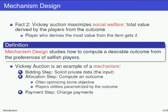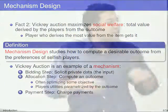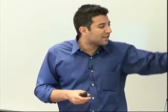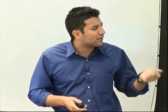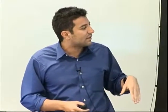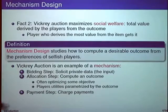This is what mechanism design tries to do more generally: figure out how to compute desirable outcomes from the preferences of selfish players, extracting information and doing the computation simultaneously. The Vickrey auction is an example of a mechanism — a three-step process: a bidding step, an allocation step where you compute the outcome, and a payment step where you charge people to incentivize proper behavior. A player's utility is determined by the second and third steps, so they choose what to do in the first step to optimize those.